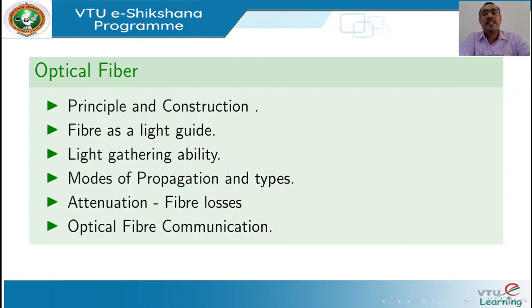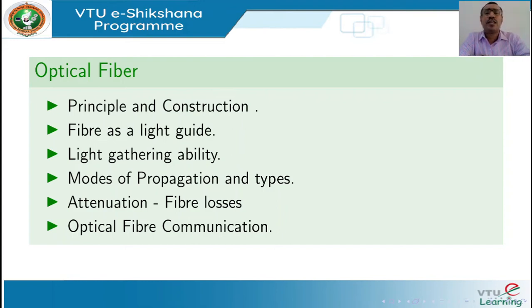There are three types of optical fibers, the classification of which is based on the modes of propagation and the RI profile. When the optical signal propagates through the optical fiber, it gets progressively reduced due to fiber losses — that is called attenuation. Finally, we discuss point-to-point communication and how optical fiber could be used to communicate between two points.